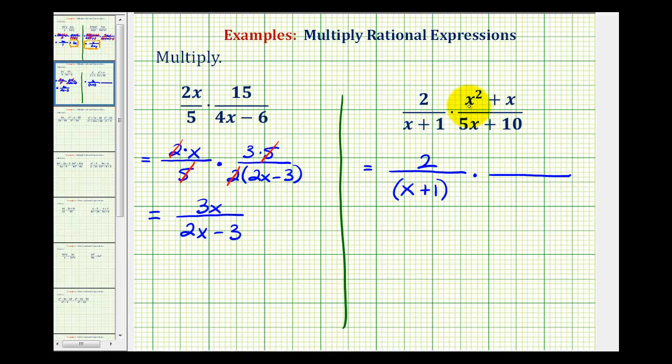Times, for x squared plus x, again the greatest common factor between these two terms is x. So we'll factor an x out, leaving us with x plus 1. And then for our denominator, we have 5x plus 10. These two terms have a common factor of 5. So we'll factor a 5 out. We're left with the quantity x plus 2.